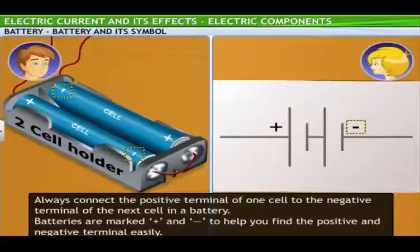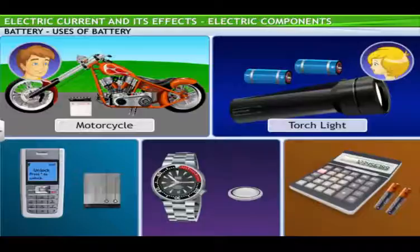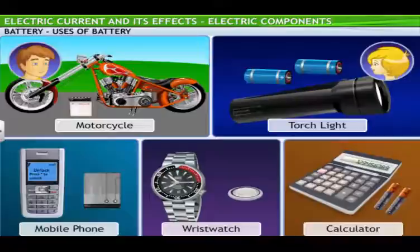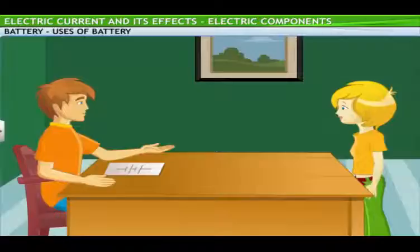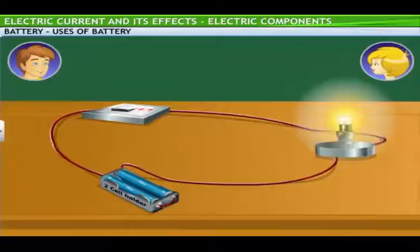That's absolutely right. We use batteries in many devices, such as motorcycles, torch lights, mobile phones, wrist watches, and calculators. If a circuit that you're building requires relatively more power, you can use a battery rather than a single cell. For example, if we want to use a bulb in a circuit, then to make it glow, we need to connect a battery instead of a cell, as the bulb will require more power.